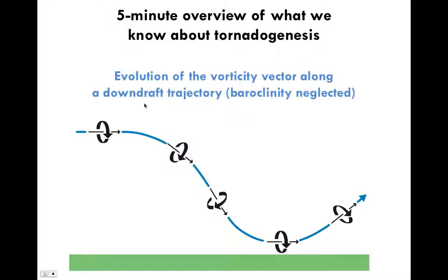What we actually need to make a tornado is a downdraft — air must descend as it approaches the ground. This blue trajectory shows a path a parcel of air might take through the downdraft of a thunderstorm. If there's horizontal vorticity upstream, as it descends in the downdraft, it gets tipped downward, then levels off, then goes upward again.